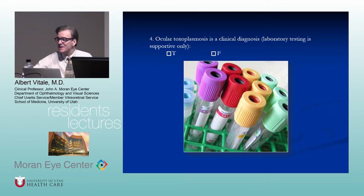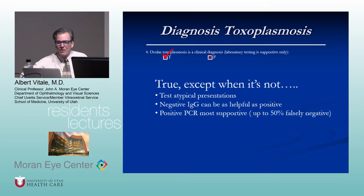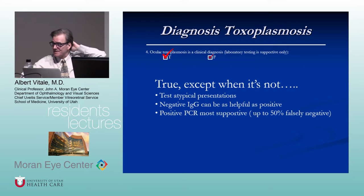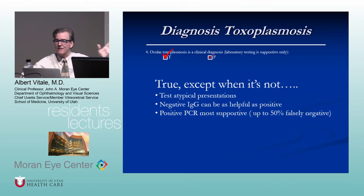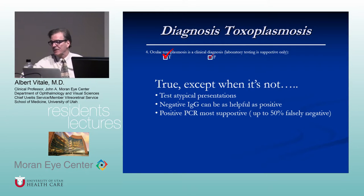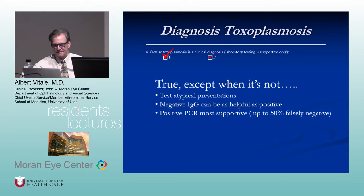What is this? Neuroretinitis — a swollen nerve and partial macular star. The most common cause of neuroretinitis is Bartonella. Cat scratch disease is caused by Bartonella henselae and Bartonella quintana. You see it mostly in kids. There is a systemic component — erythematous papule at the inoculation site from the cat scratch, and a flu-like illness with regional adenopathy. Ocular disease occurs in about 10% of patients, presenting as Parinaud's oculoglandular syndrome or neuroretinitis.